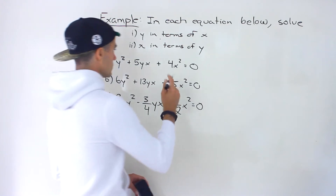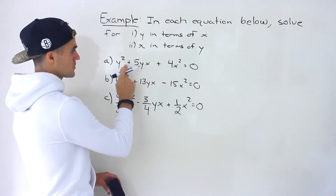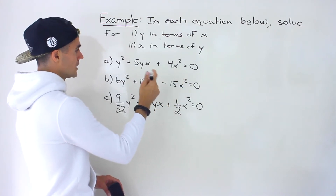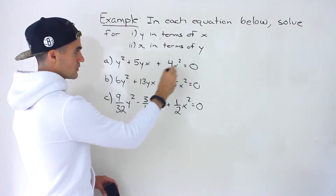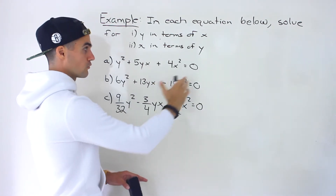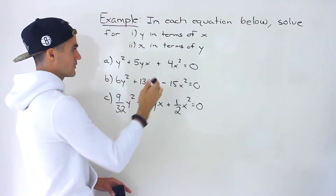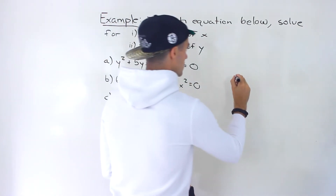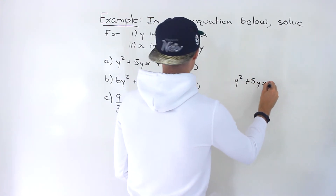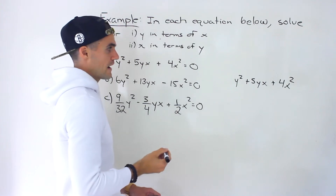But the same process is going to apply. So if I take this over here, we've got y squared plus 5yx plus 4x squared is equal to 0. What you want to do is try to factor this. First, bring everything over so you have 0 on one side, then see if you can factor whatever's on the left side. Let's try to factor this.